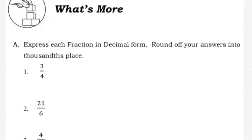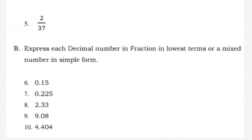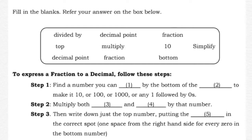Under 'What's More': Part A — express each fraction in decimal form, rounding off answers to the thousandths place (three decimal places). Part B — express each decimal number as a fraction in lowest terms or as a mixed number in simplest form. Then under 'What I Have Learned,' fill in the blanks using the terms provided in the box below.